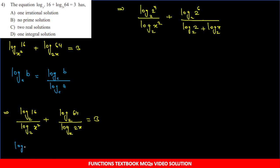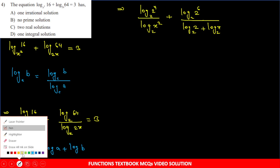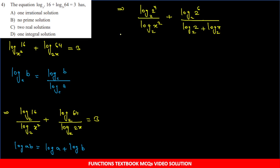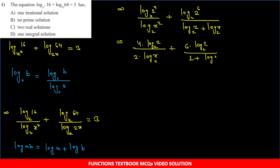Log AB = log A + log B property use kar rahe hain. Jab value ke upar power hoti hai, to log mein value bahar aa jaati hai. 4 bahar aayega aur log(2 base 2) = 1. Similarly 6 bahar aayega. So expression simplifies to: 4·1/(2·log x base 2) + 6·1/(1 + log x base 2) = 3. Yani 2/(log x base 2) + 6/(1 + log x base 2) = 3.